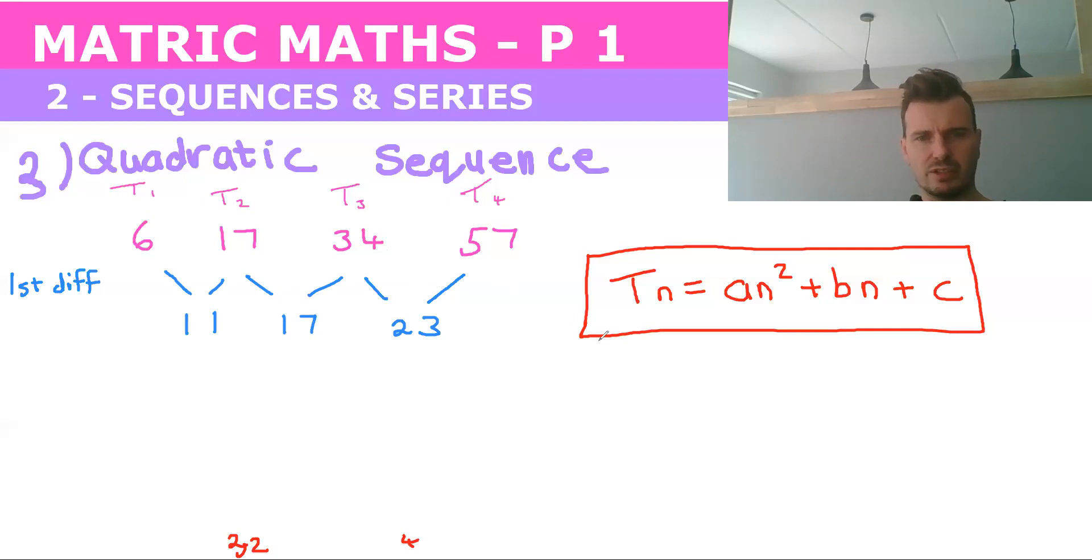And if we put these ratios over each other to check if it's a geometric sequence, we get that that one's 2. 57 over 34 does not equal 2. So we rule out geometric sequence.